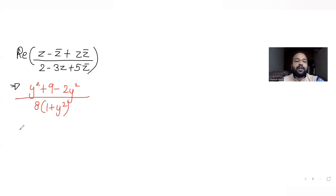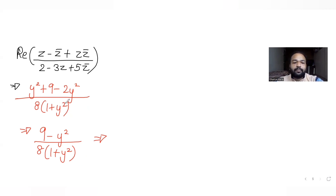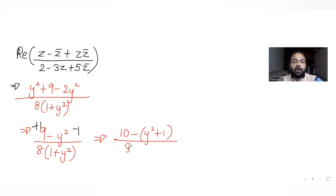So if I find just the real part of the entire expression, I get (y² plus 9 minus 2y²) divided by 8(1 plus y²), which simplifies to (9 minus y²) divided by 8(1 plus y²). I can rewrite this by adding and subtracting 1 in the numerator: (10 minus (y² plus 1)) divided by 8(1 plus y²), which gives 10/(8(1 plus y²)) minus 1/8.